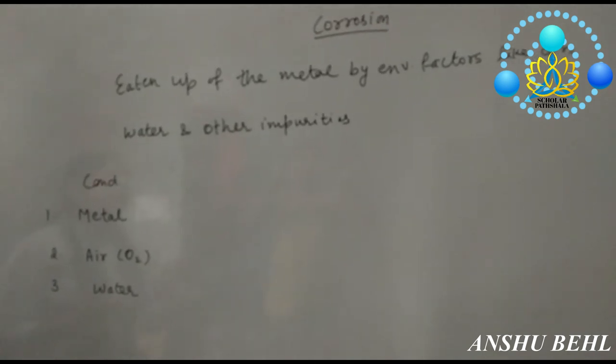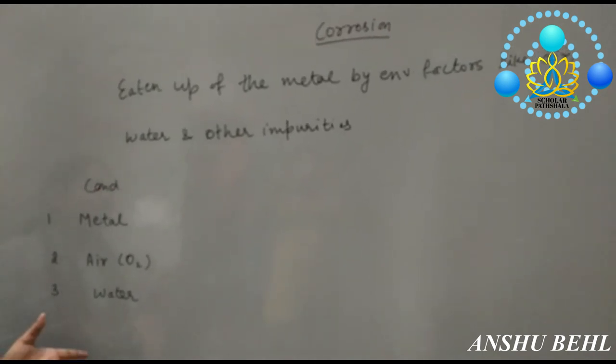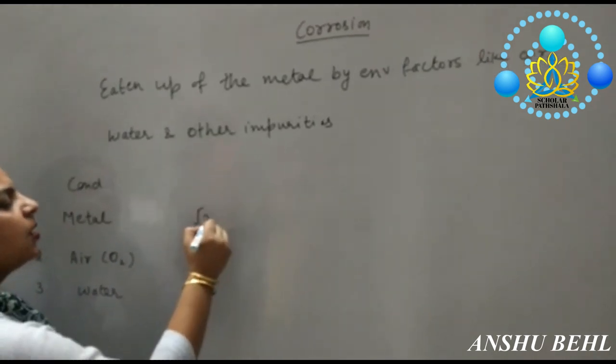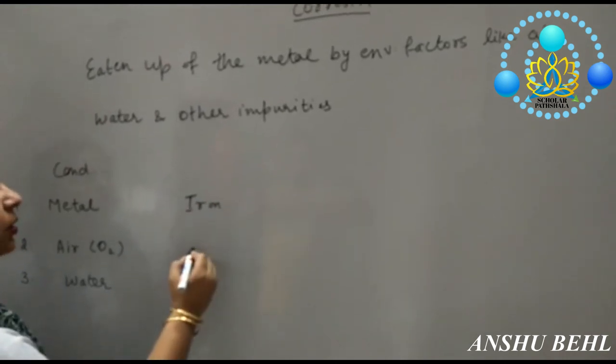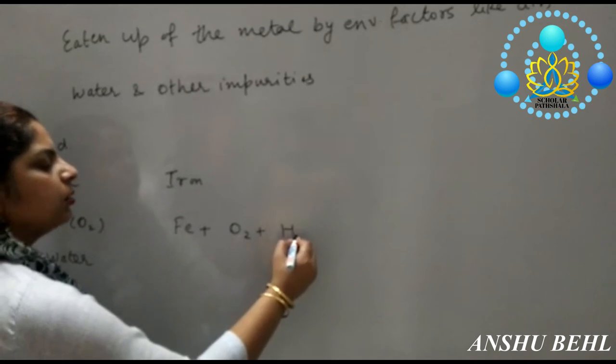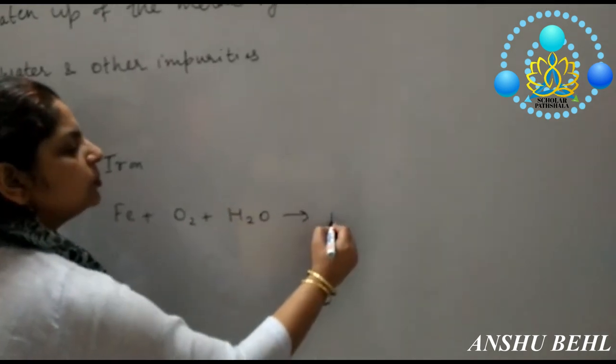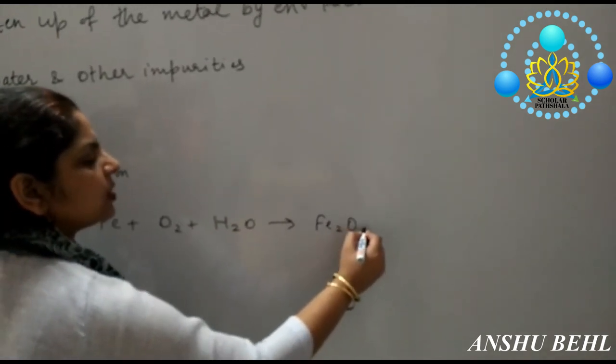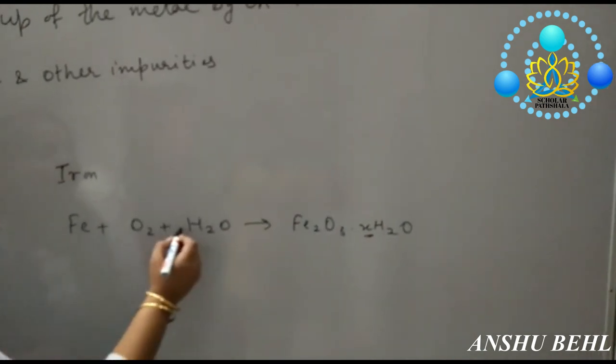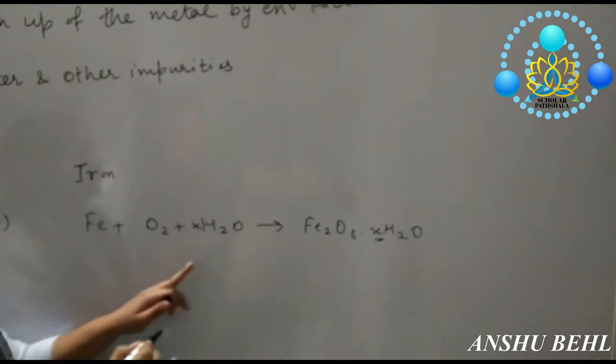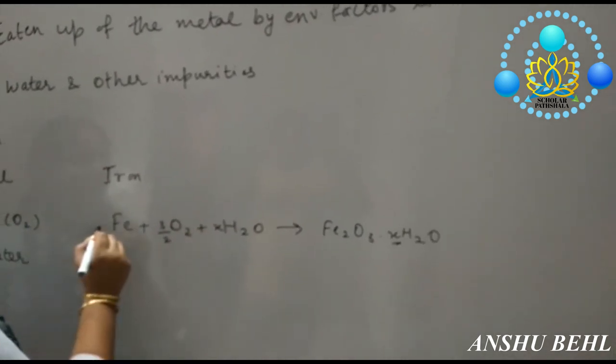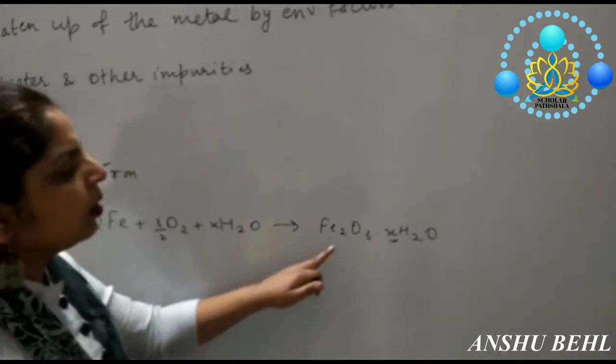So what are the losses that you are bearing when metal is getting corroded? First thing in case of iron. Iron when striking with oxygen, water, it forms iron oxide. X water molecules means certain amount of water molecules are combining with it. It is forming rust.